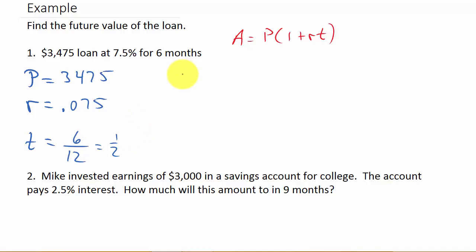Alright, so let's go ahead and work it. So I've got A equals P, which is the 3,475, times 1 plus RT. Well, R is .075 times the 6 over 12. Alright, so now we've got to punch this into our calculator.